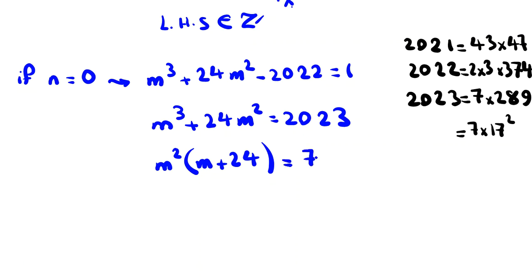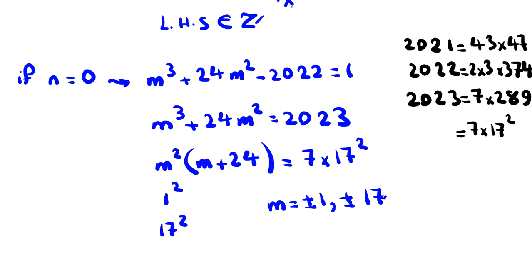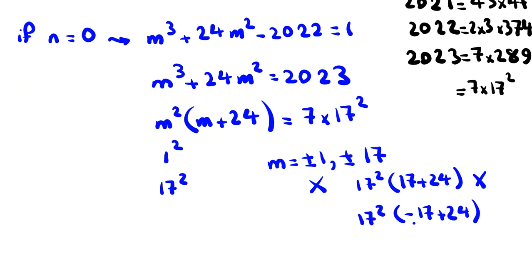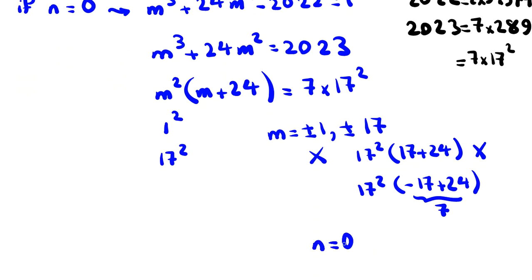We see that m²(m + 24) = 2023 = 7 × 17². Since m² must be a perfect square, the only possible cases are m² = 1 or m² = 17² = 289. So m can be ±1 or ±17. Replacing m = 1 or m = −1 doesn't work. For m = −17: (−17)²(−17 + 24) = 289 × 7 = 2023. It works! So the first answer is n = 0, m = −17.